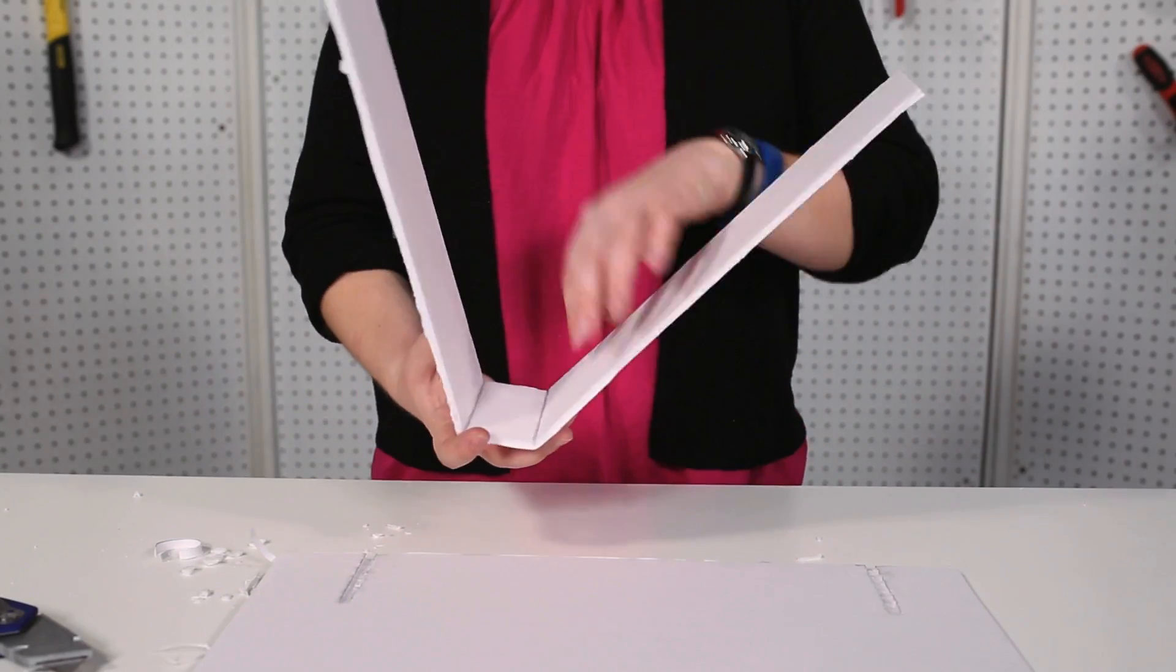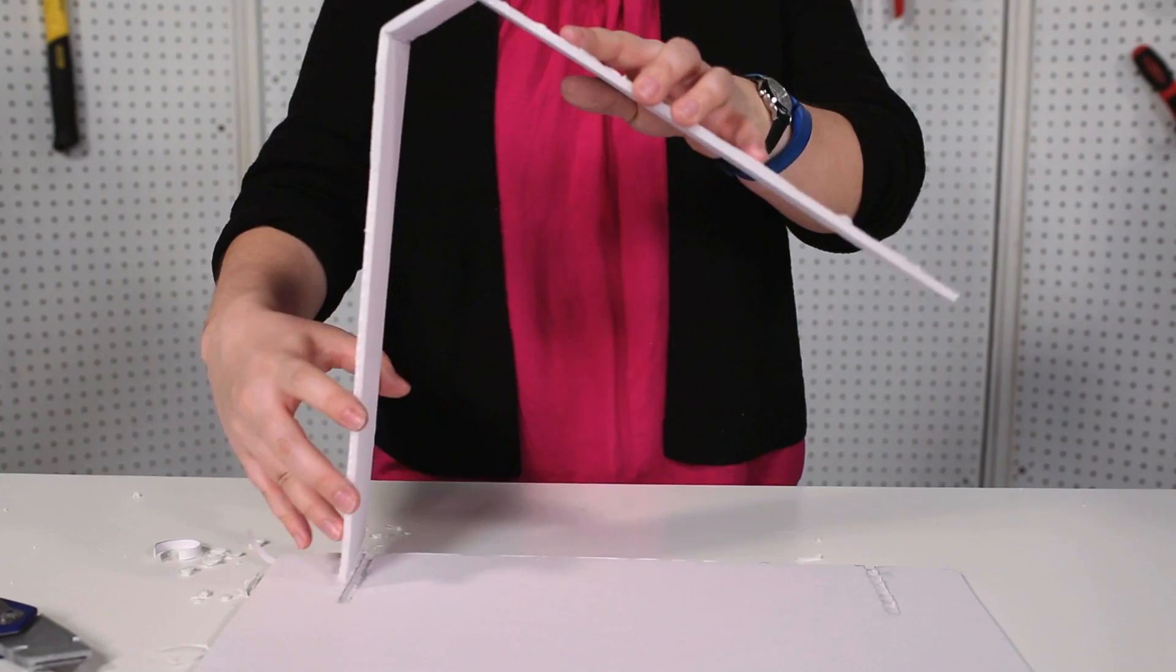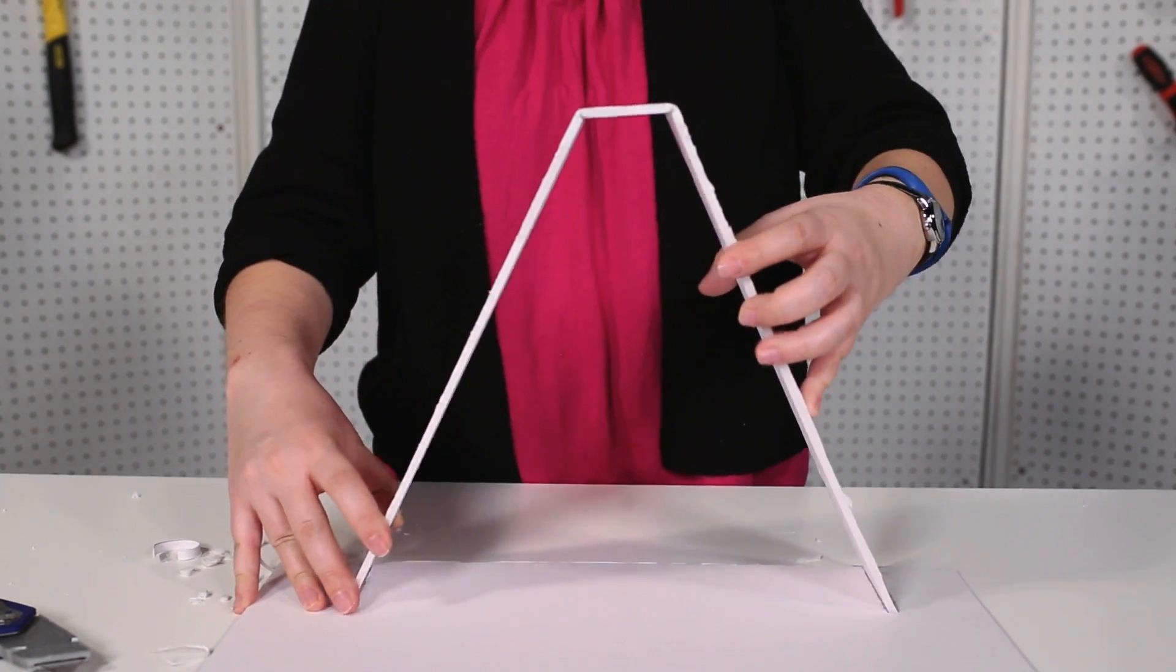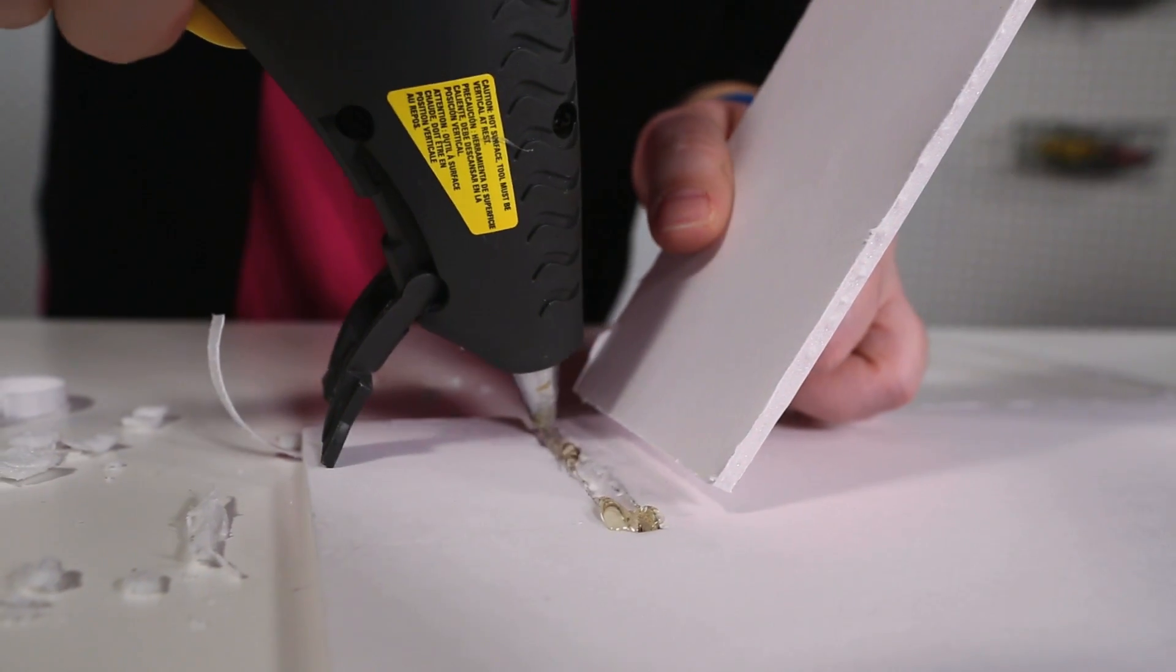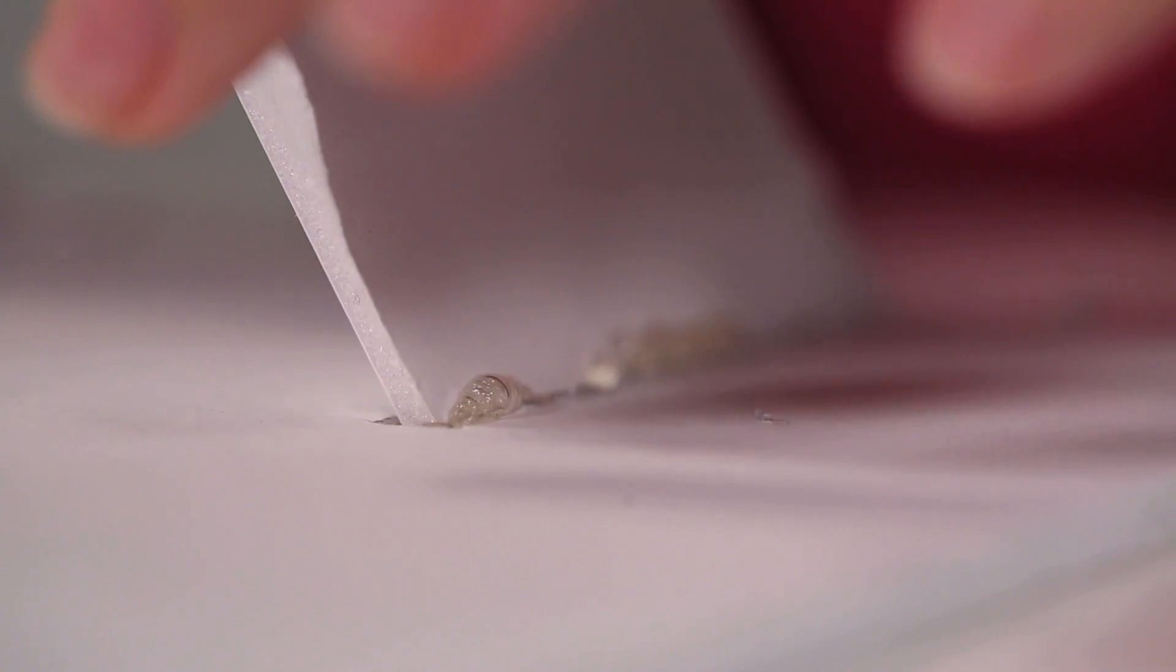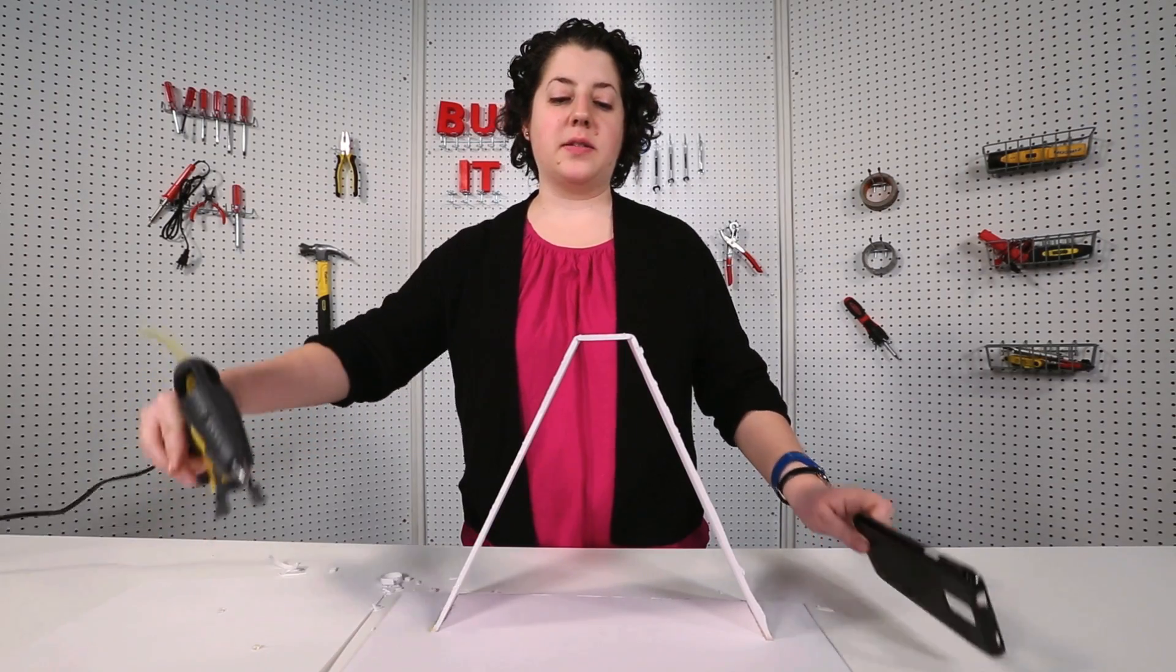Fold the bridge along its notches. Then stick the ends of the bridge into the notches on the square. Hot glue them in place. Finally, glue a smartphone case to the top of the bridge.